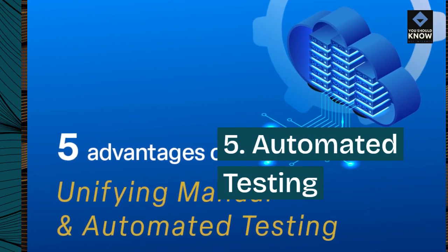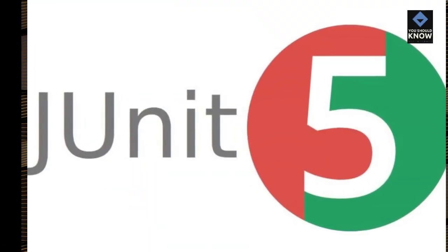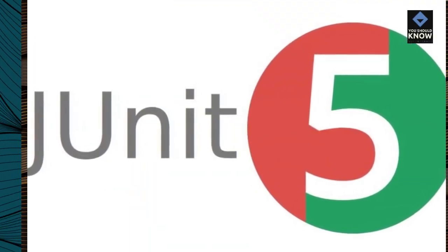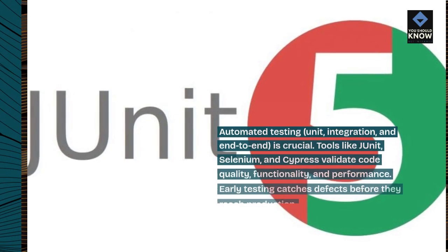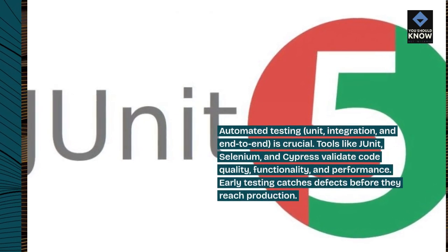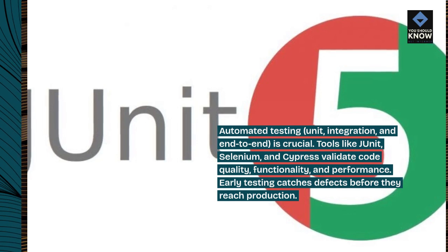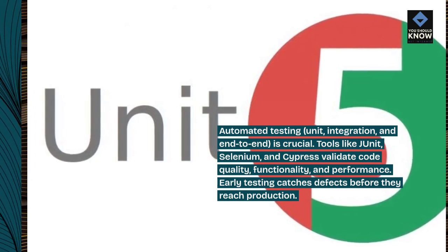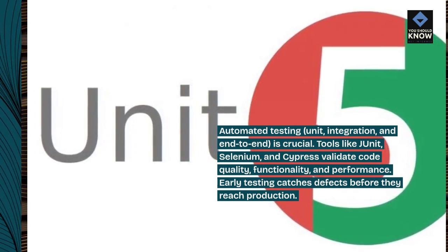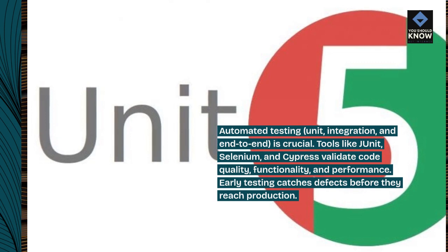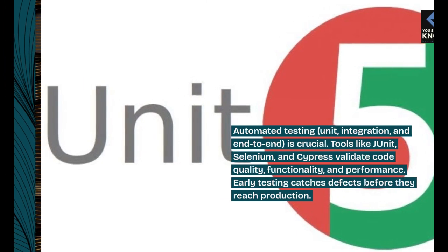5. Automated Testing. Automated testing — unit, integration, and end-to-end — is crucial. Tools like JUnit, Selenium, and Cypress validate code quality, functionality, and performance. Early testing catches defects before they reach production.